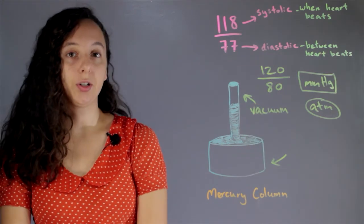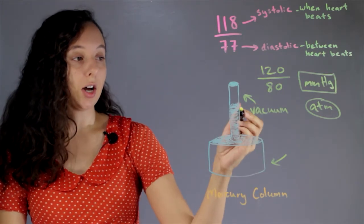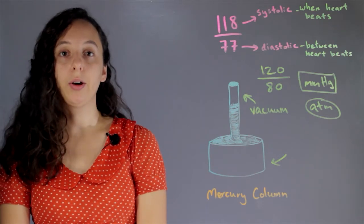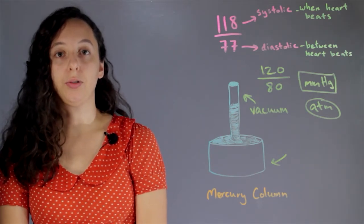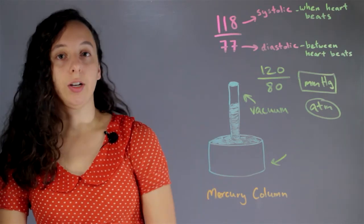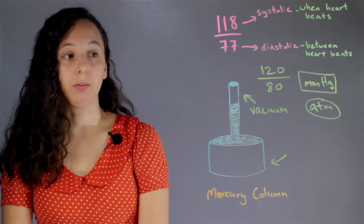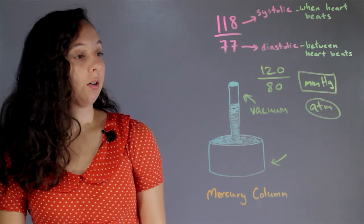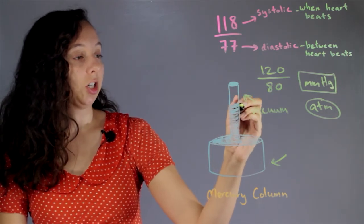But then at a certain point, the mercury stops. And this will happen with any liquid. And you've probably noticed it, if you fill up a straw full of water, and then put your finger on top, you can stop all the liquid from leaving. And so this is a vacuum, and this is completely stationary.